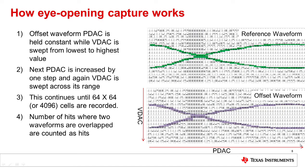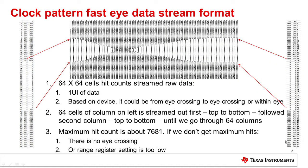To show how data gets streamed out of the device, I captured data using a clock pattern. When we refer to cell 1,2 for example, it means PDAC 1 and VDAC 2. I captured 64 by 64 cells — 64 rows with 64 columns. For clarification, I have zoomed into the first two and the last two columns.